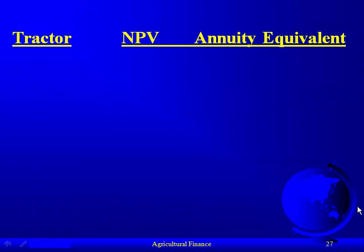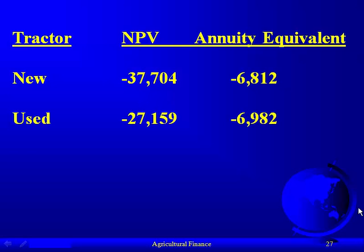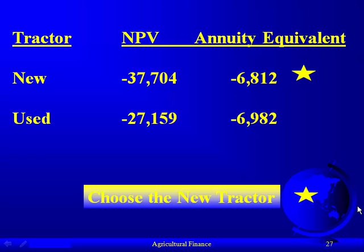Now make the comparisons. We have the new tractor and the used tractor, each with its net present value and annuity equivalent. If we had erroneously used the net present value, we would have chosen the used tractor. But now that we have the annuity equivalents — accounting for the difference in life between these two tractors — we correctly choose the new tractor as the least-cost option, because it has a lower annual cost.